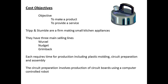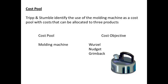Trip and Stumble make small kitchen appliances, and have three main selling lines: the Wurzel, Nudget, and Grimbach. Production for each line includes plastic molding, preparation of a circuit board, and then assembly. The use of the molding machine is identified as a cost pool for the objective of making the Wurzel, Nudget, and Grimbach appliances. The costs from this cost pool can now be allocated to these products.